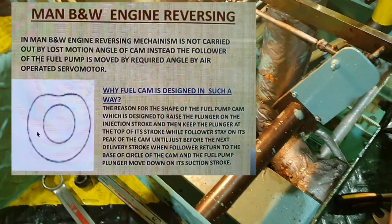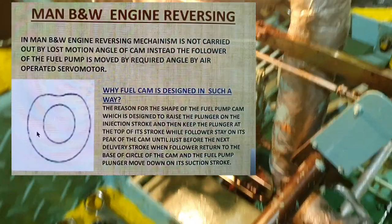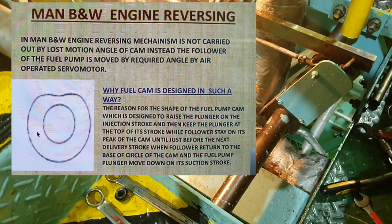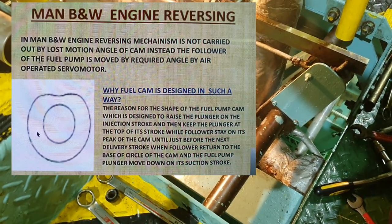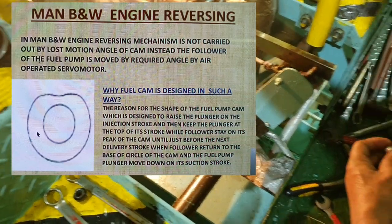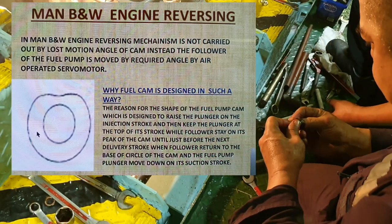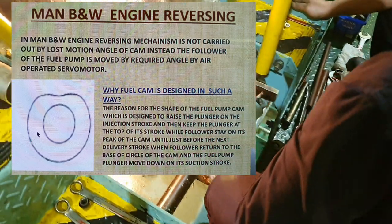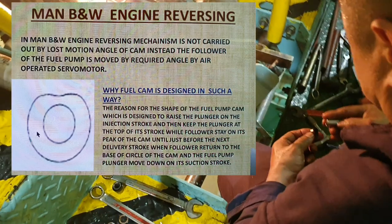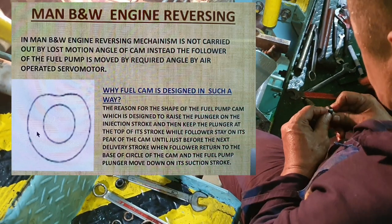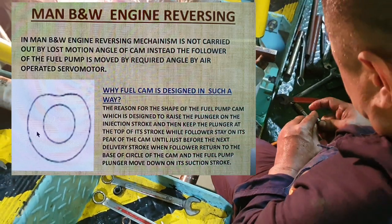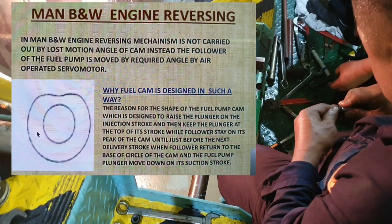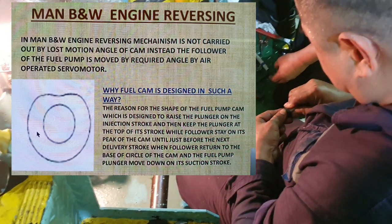A BMW engine reversing mechanism is not controlled by a lost motion angle of cam. Instead, the follower of the fuel pump is moved by the required angle by an air operator, servo motor, or air cylinder.